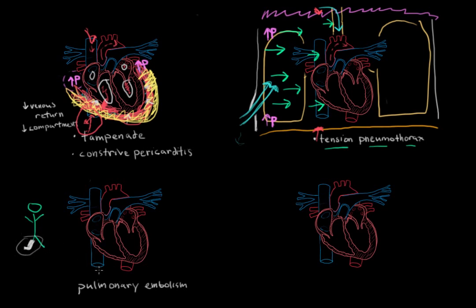So this DVT may potentially break off, and when a clot breaks off it's known as an embolism. So it embolizes, and you can see that it can fit in the heart, but it gets stuck in the lungs, in the pulmonary arteries.